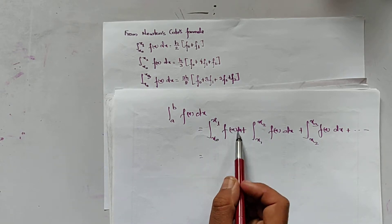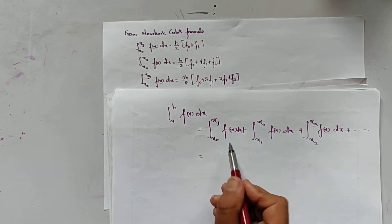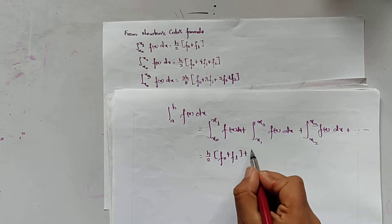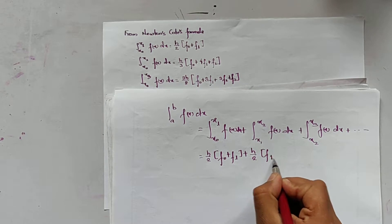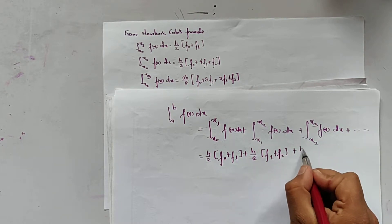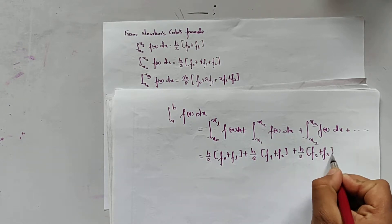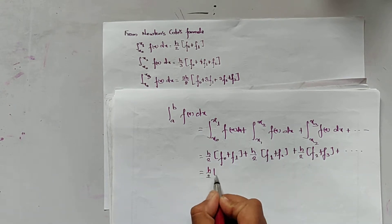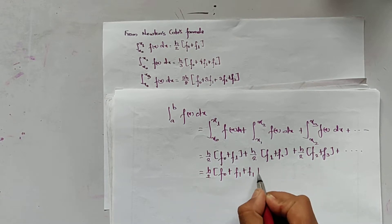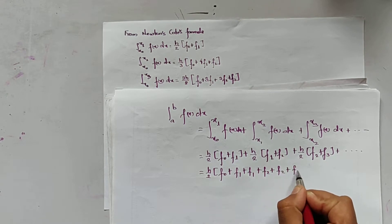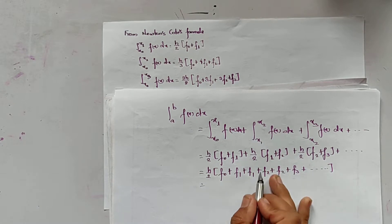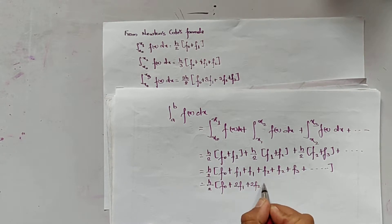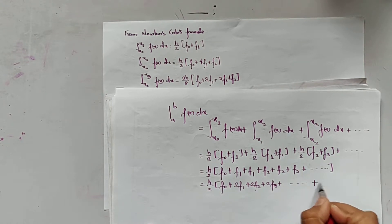By using Newton-Cotes first formula, we can write each piece as h/2 times (f0 + f1), similarly h/2 times (f1 + f2), similarly h/2 times (f2 + f3), and so on. Taking h/2 common, we get h/2 times (f0 + f1 + f1 + f2 + f2 + f3 + dot dot dot). In simpler form, this can be written as h/2 times (f0 + 2f1 + 2f2 + 2f3 + dot dot dot + fn).